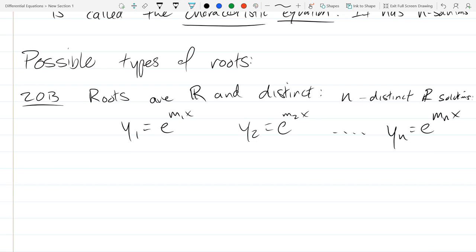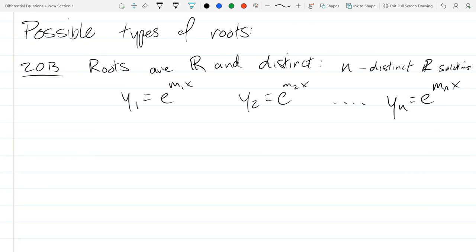So we have n distinct real solutions. So what we get y1 will be e to the m1x. y2 will be e to the m2x. yn e to the mnx. So this one is pretty straightforward, boring. It's pretty much what you expect. The linear combination will be the general solution. All right. So we'll do two example problems here.